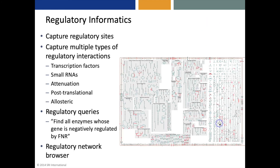The regulatory informatics capabilities of Pathway Tools include capturing both regulatory sites and multiple types of regulatory interactions. There are regulatory queries, such as finding all the enzymes whose gene is negatively regulated by FNR. The results of that query are highlighted on the metabolic network diagram for E. coli. There's also a regulatory network browser.